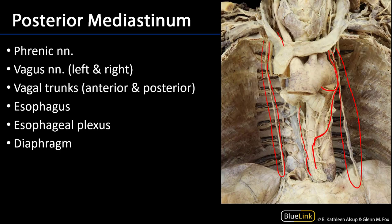We can see the diaphragm here, and we can see the phrenic nerves innervating each hemidiaphragm. We can also see where the esophagus would be transmitted through the diaphragm at the esophageal hiatus, which is approximately at the T10 level.